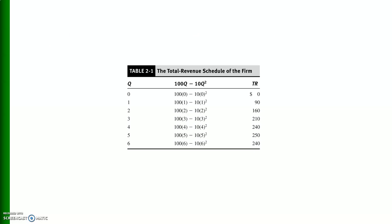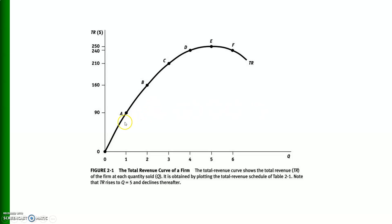This table shows the schedule of total revenue for a farmer. The first column shows units of output, and the total revenue function is shown. Substituting these values into the function gives us total revenue in dollars. This is also the geometrical representation of the total revenue function — essentially a translation of the total revenue schedule or equation into geometric form.